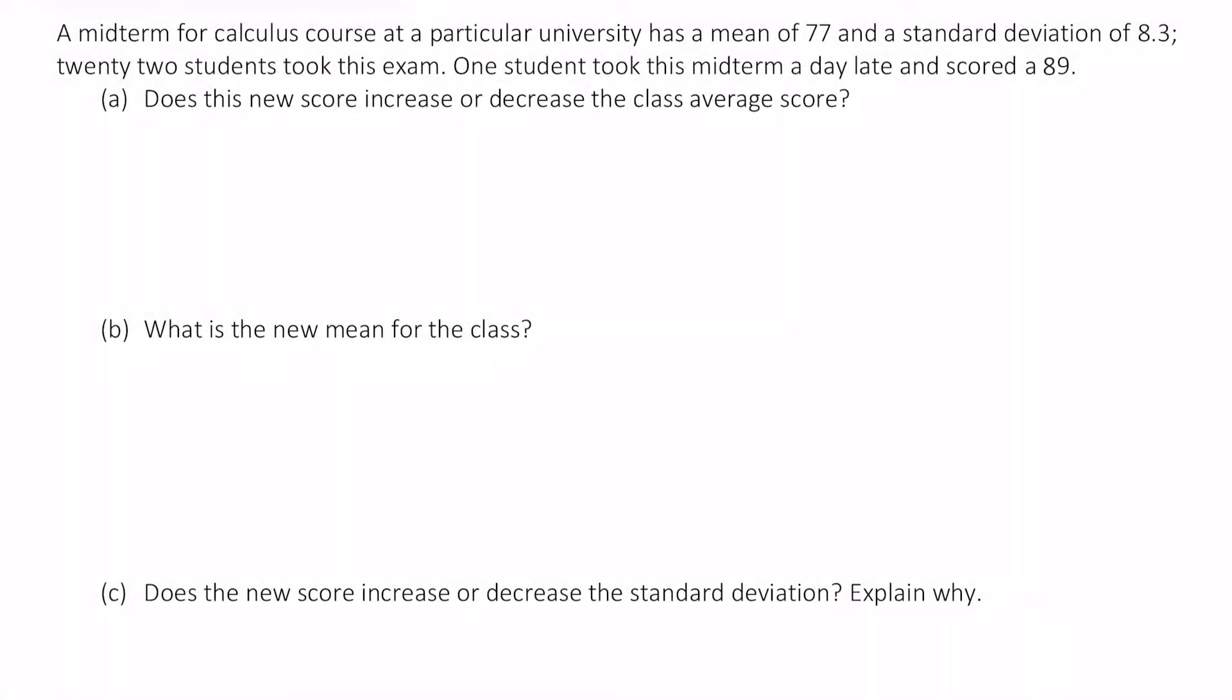Welcome. In this video we're going to continue discussing measures of center and variation. A midterm for a calculus course at a particular university has a mean of 77 and a standard deviation of 8.3. Twenty-two students took this exam. One student took this midterm a day late and scored an 89.